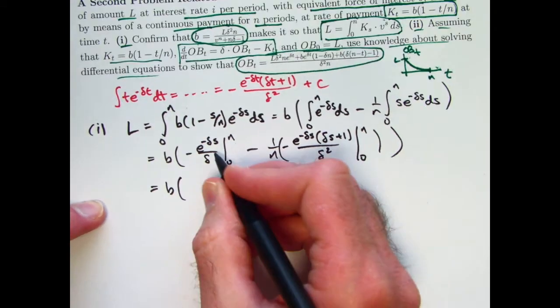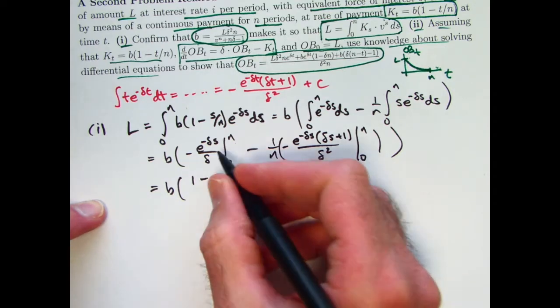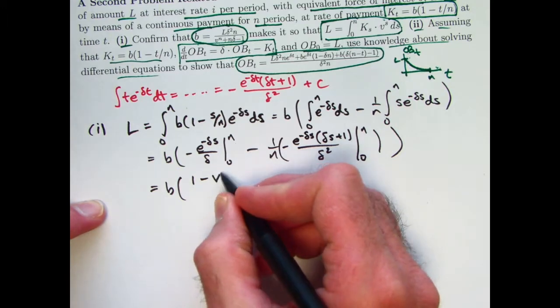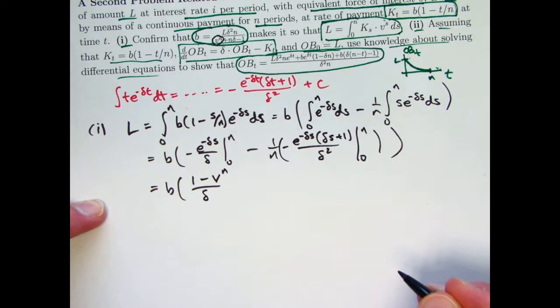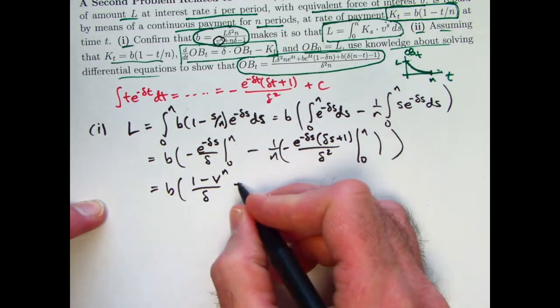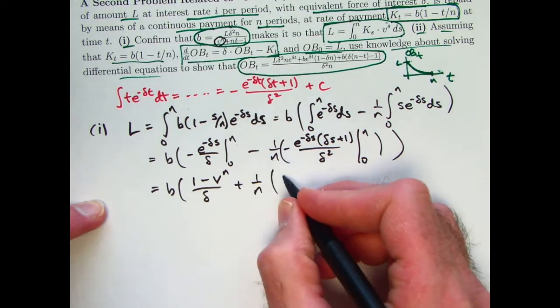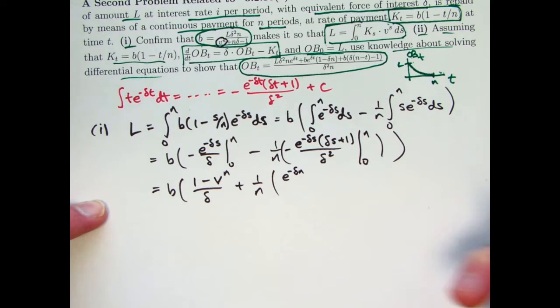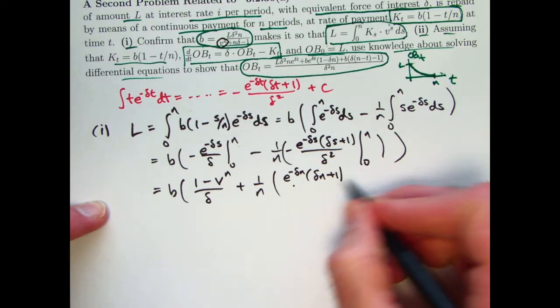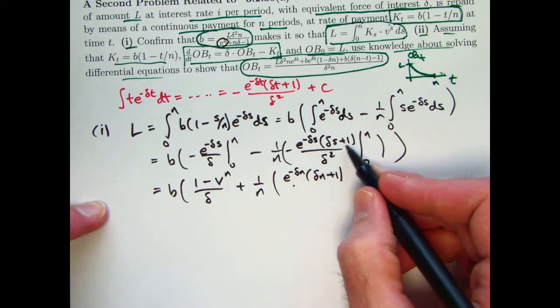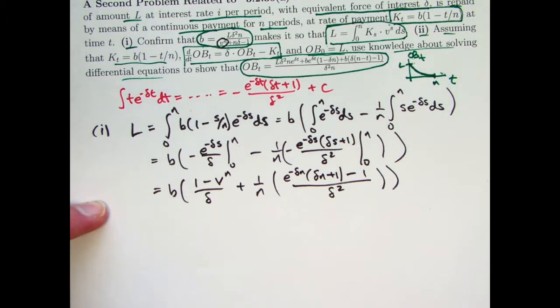All right, keep going here. Plug in n, subtract what you get when you plug in 0. E to the 0 is 1, and two minuses of signs make a plus. I get a positive 1 minus e to the negative delta n power, which is the same, by the way, as v to the n. I think I'm going to go ahead and put a v to the n in there right away. These two minus signs can cancel, so I can make a plus 1 over n in parentheses. Plug in s equals n. I made the two minus signs cancel, so I'm going to get e to the negative delta n, which I can write as v to the n, times in parentheses delta times n plus 1. Minus what I get when I plug in 0. E to the 0 is 1. When I plug 0 into this, I get 1, so I'm going to get a minus 1 all over delta squared.